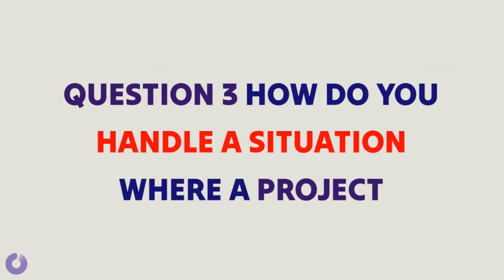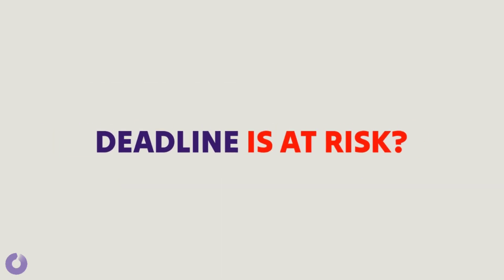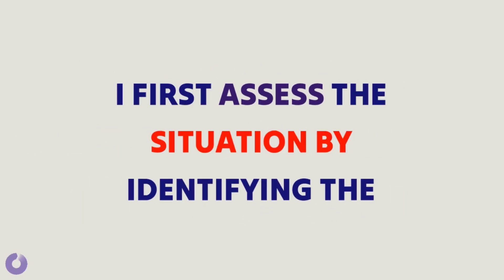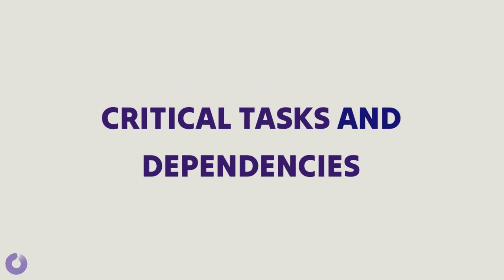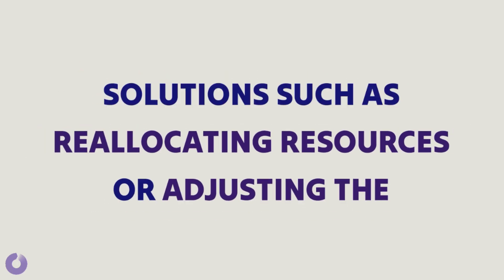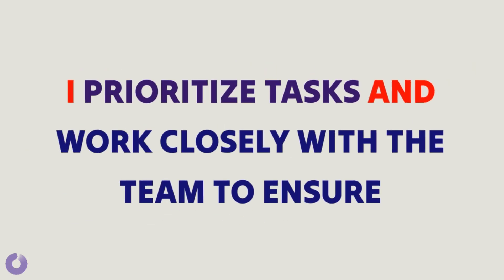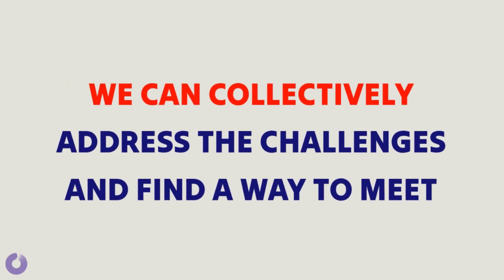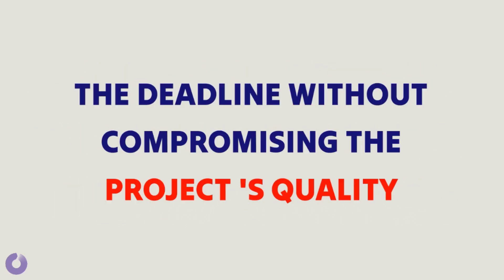Question 3: How do you handle a situation where a project deadline is at risk? Sample answer 1: When faced with a potential project deadline risk, I first assess the situation by identifying the critical tasks and dependencies. I then communicate with stakeholders to discuss possible solutions, such as reallocating resources or adjusting the project scope. If necessary, I prioritize tasks and work closely with the team to ensure efficient execution. By maintaining open and transparent communication, we can collectively address the challenges and find a way to meet the deadline without compromising the project's quality.